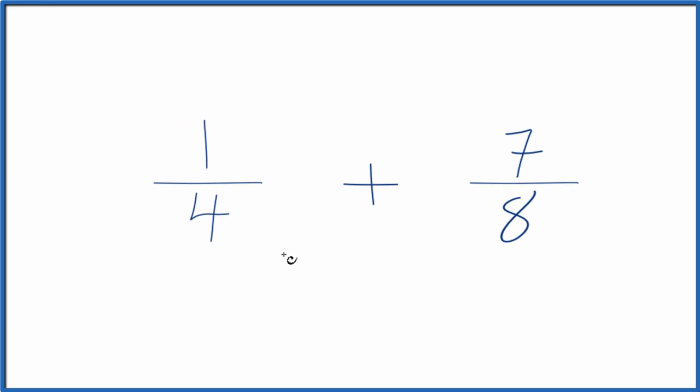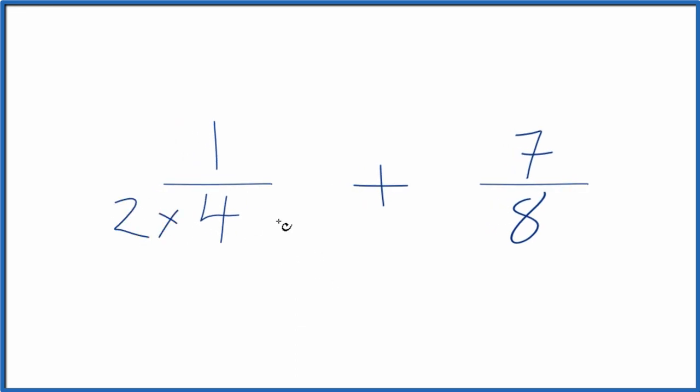We could just multiply 2 times 4, that would give us 8, and we already have 8 here. But we can't just multiply the denominator by 2, we also need to multiply the numerator by 2. That's because 2 divided by 2 is 1. So we're just multiplying 1 fourth by 1. We don't change the value, just the way it's represented.